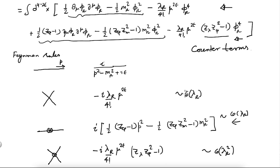Let us go and try to calculate something physical in the theory — it is the same theory, nothing new. Let us try to figure out the physical mass. I will choose some value of m_r, some value of λ_r, and some value of μ — these will be fixed inputs. Then I ask: given these choices, what is the physical mass that I get? That physical mass will of course depend on m_r and λ_r.